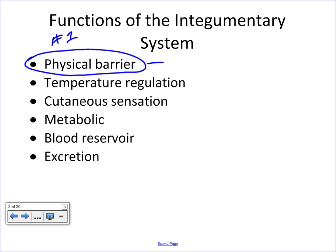Let's break this down. Skin is a physical barrier — so a physical barrier against what? What is skin exactly protecting us from? I like to break this down into two different categories: one, protecting us from pathogens — basically agents that can get into our body and cause us to become sick or ill, like bacteria.